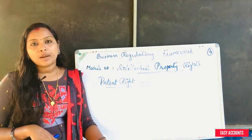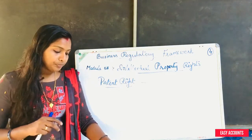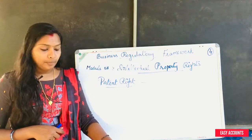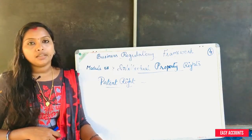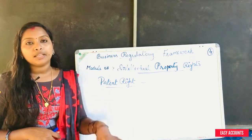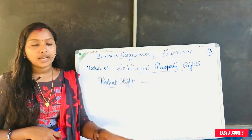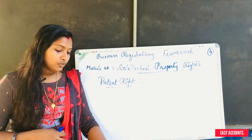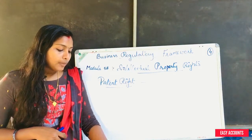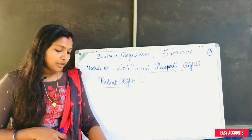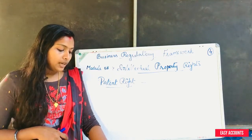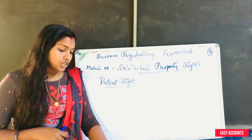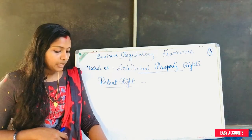This is the examination of application. Opposition to grant of patent: where an application for a patent has been published but the patent has not been granted, any person may in writing represent by way of opposition to the controller against the grant of any patent.